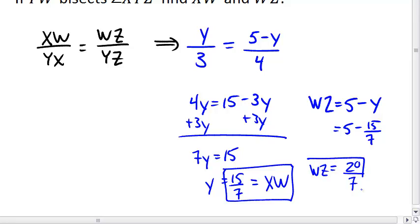Just need a common denominator, and that again was the length of WZ. So there's two examples on how to use the Angle Bisector Theorem to set up a proportion and solve it for the missing lengths of a triangle.